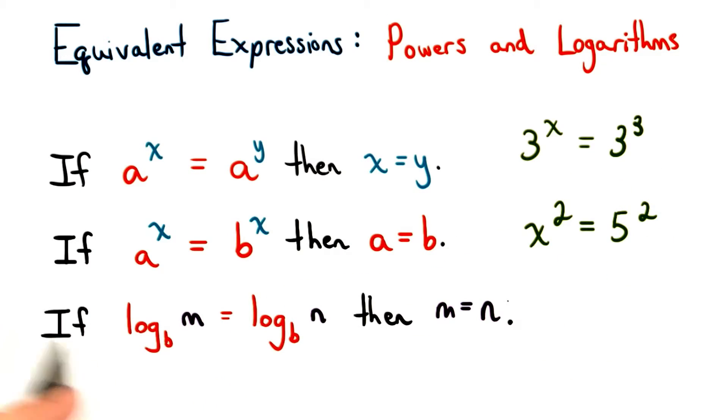The last fact that we'll use is that if log_b(m) equals log_b(n), then we know that m must equal n. Since we're taking the log of base b, we know that these two numbers must be the same in order for the logarithms of those numbers to both be the same as well. We haven't seen an example like this yet, but we'll use this idea in the upcoming problems.